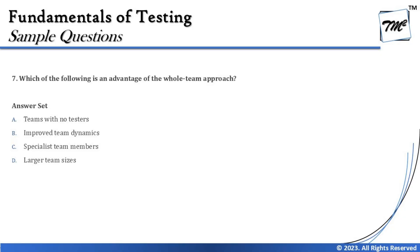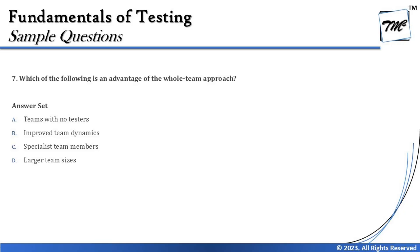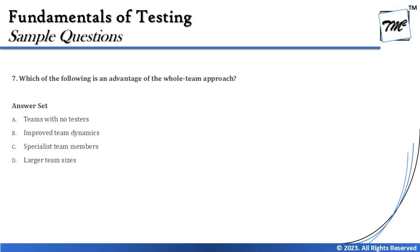Moving to question number 7: which of the following is an advantage of the whole team approach? This should be straightforward since we know what the whole team approach is. The options are: A — a team with no tester, which is not relevant; B — improved team dynamics, which makes sense; C — specialist team members, which also seems plausible; and D — larger team size. In the whole team approach, we actually look for a smaller, limited set of people who take overall responsibility for product implementation, so D is out.